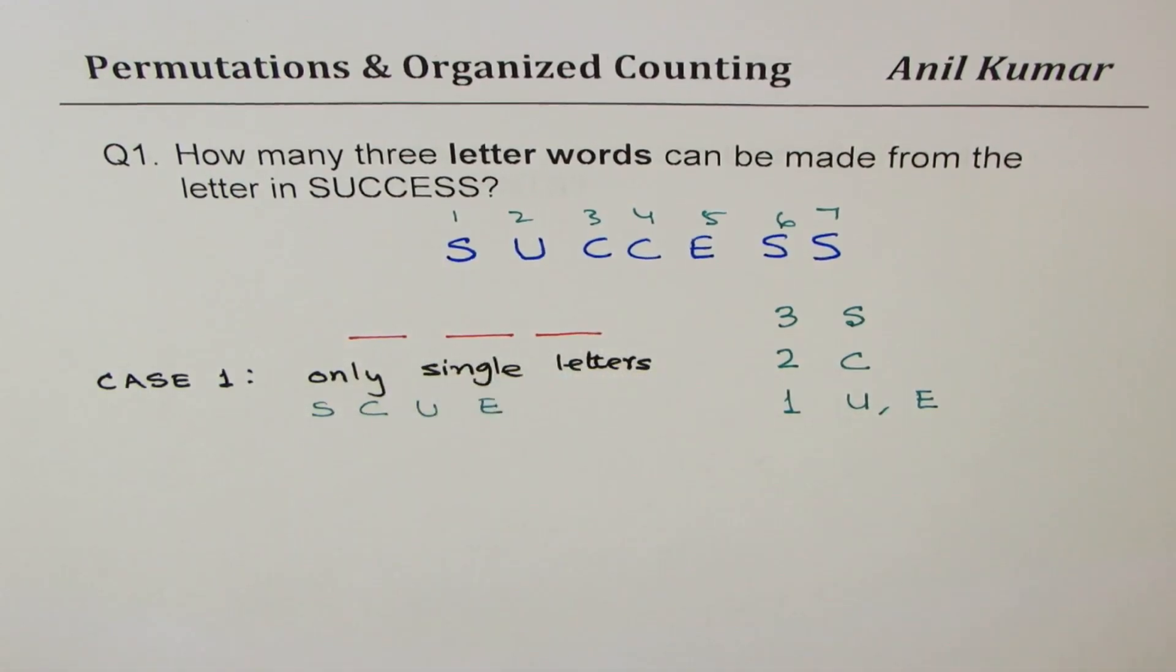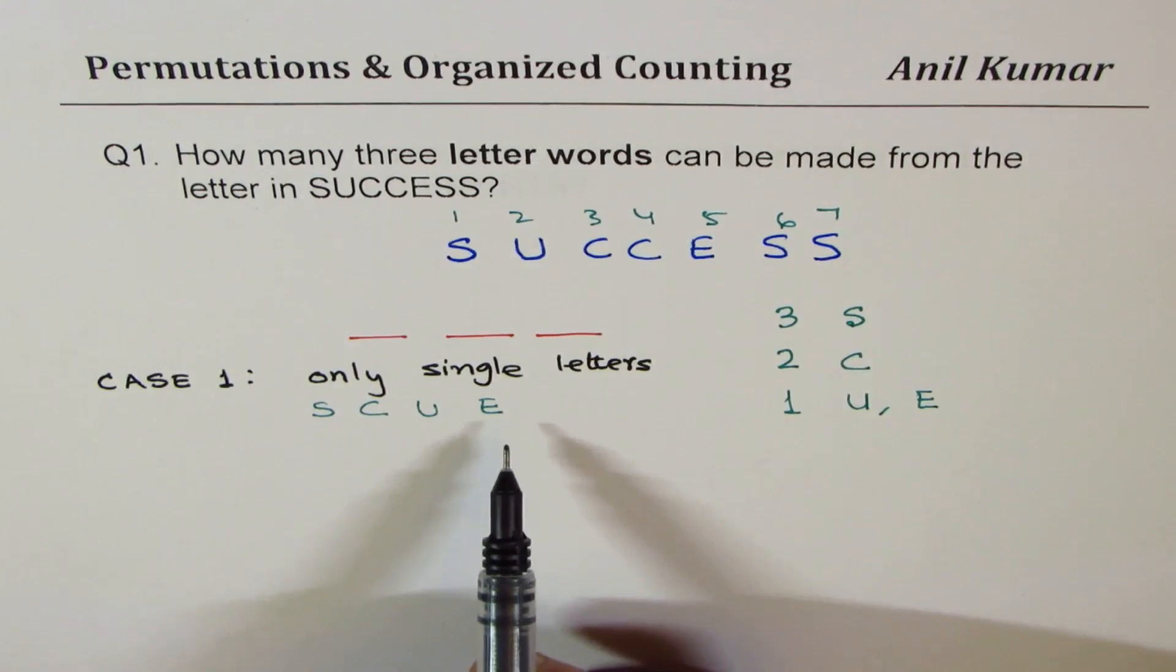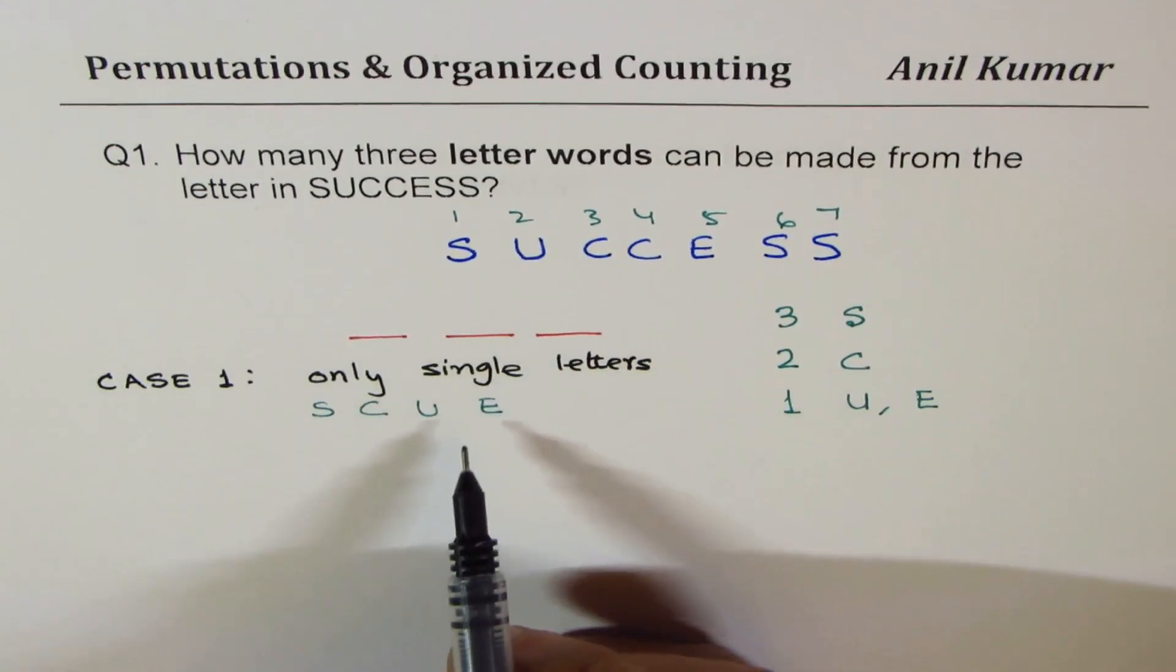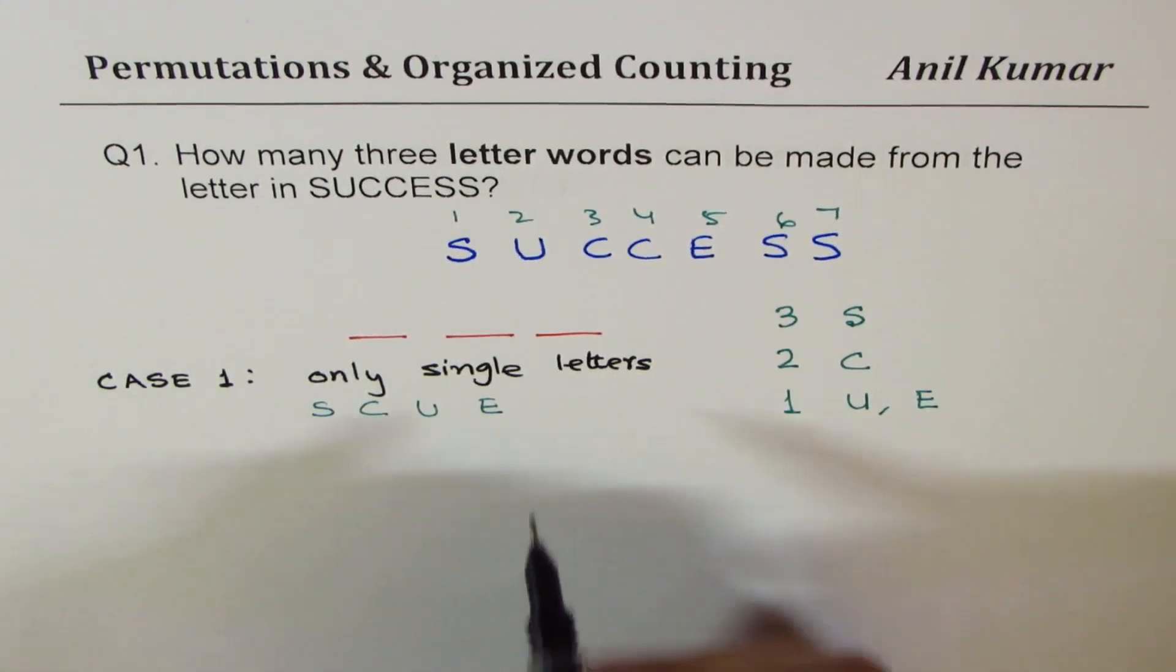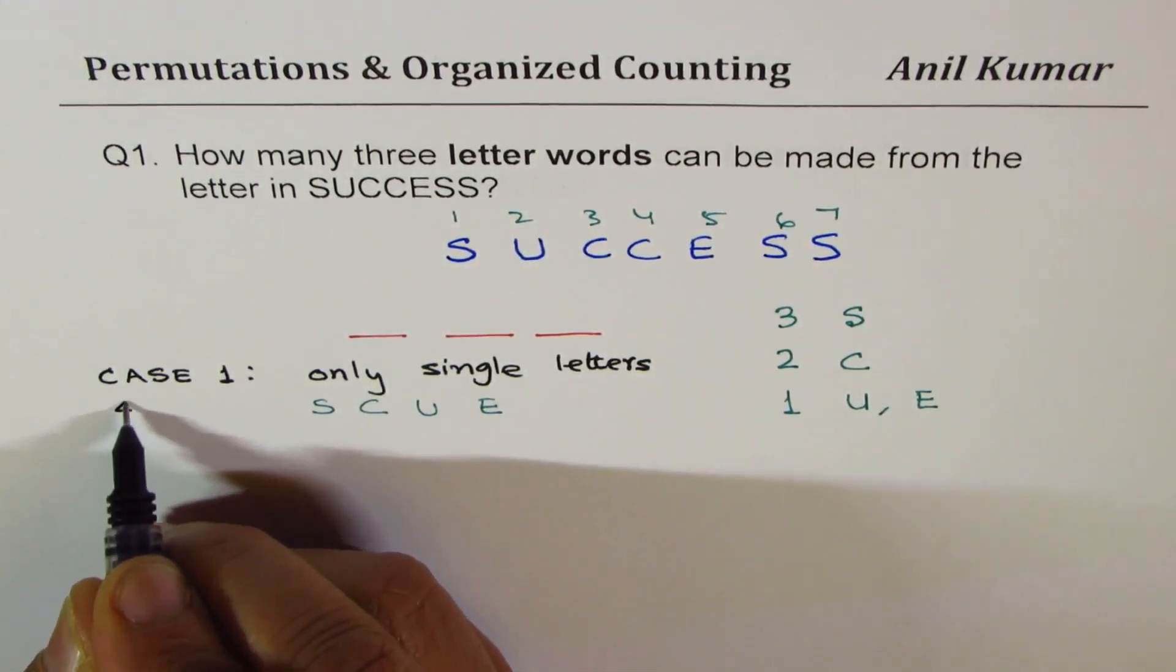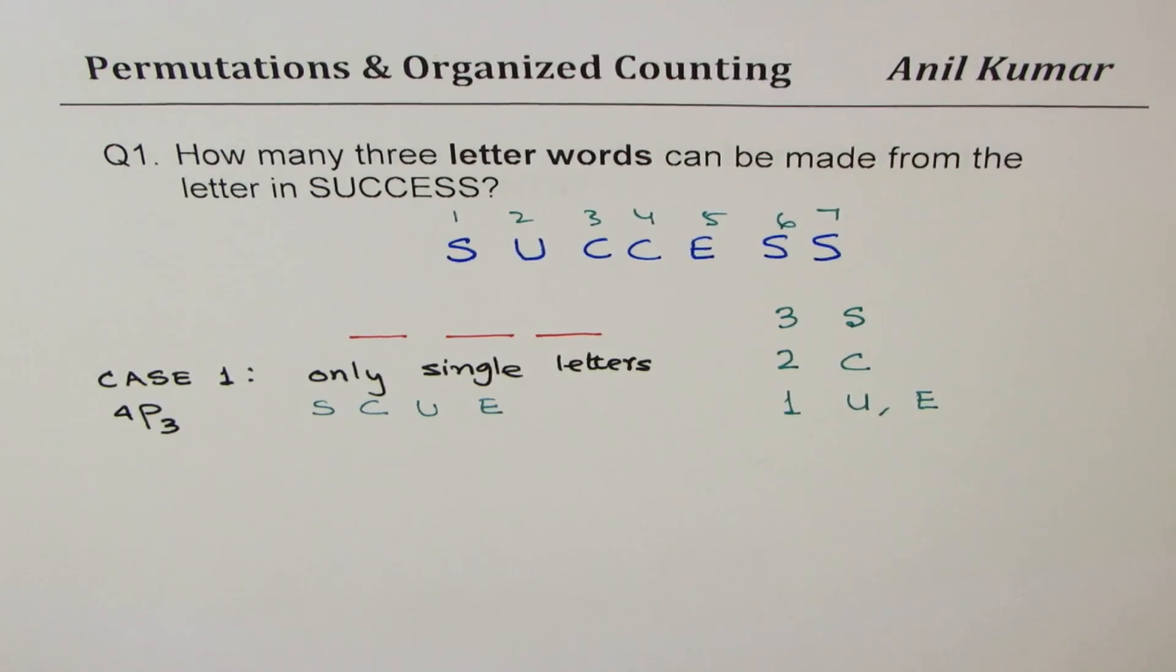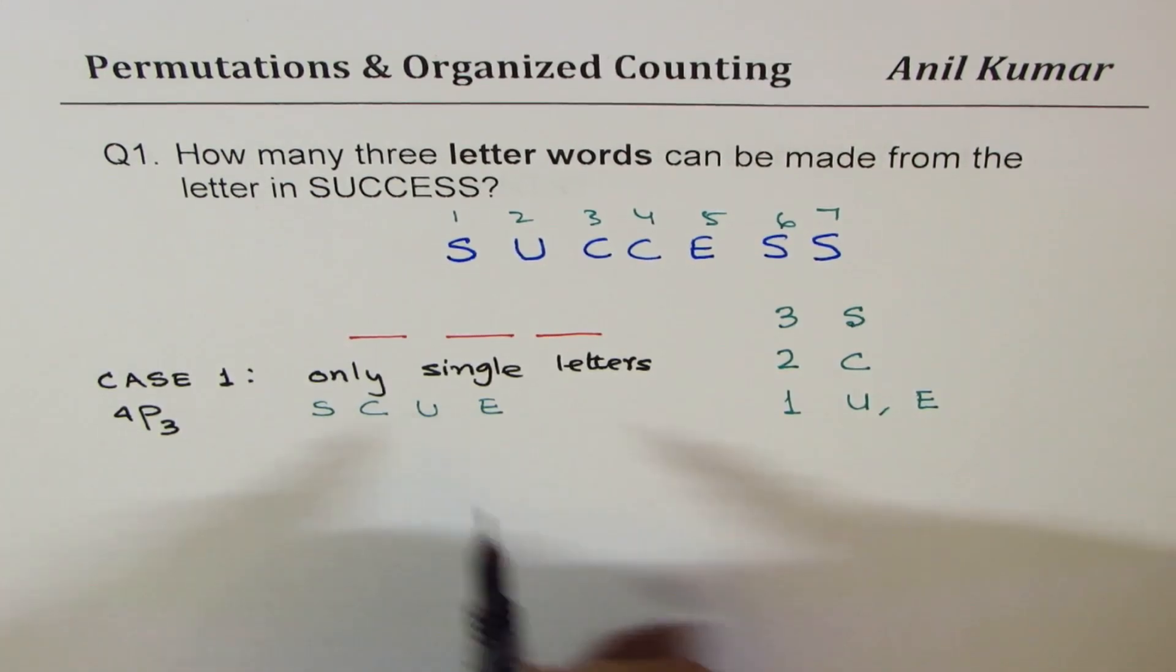And we have to fill in three spaces; nothing is repeated. So how many ways can you do it? Well, we are selecting three from four, so 4P3 is the answer. Correct. So that is Case 1.